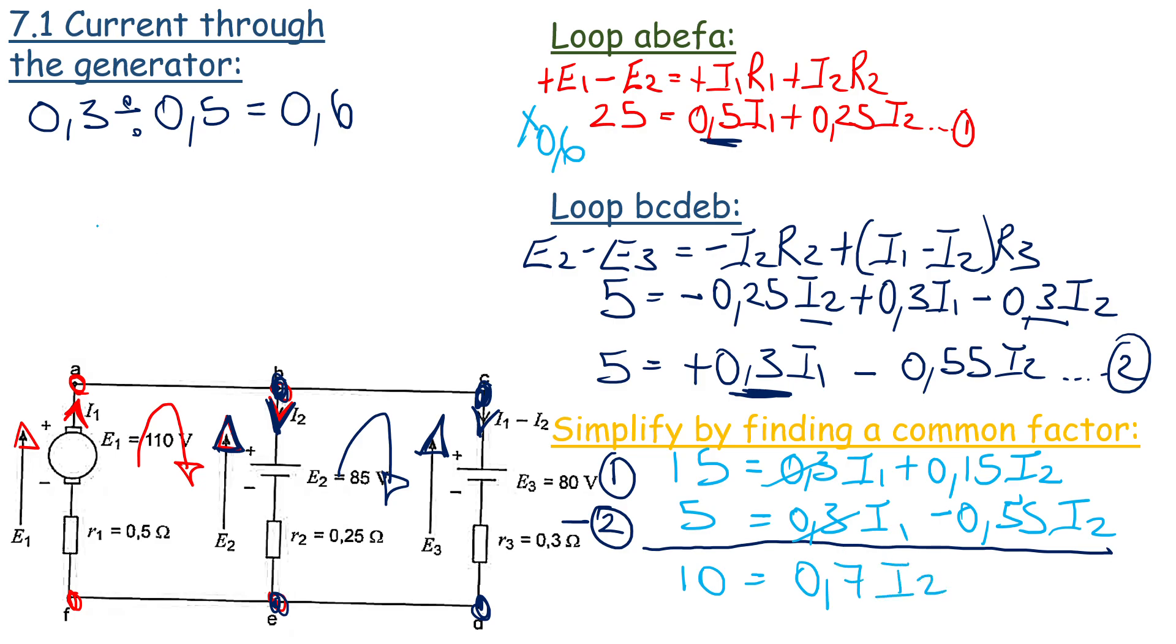Right, so doing a little bit of mathematics over there, you'll see that I2 is equal to 14.285 amps. So that's the current passing through the second battery.